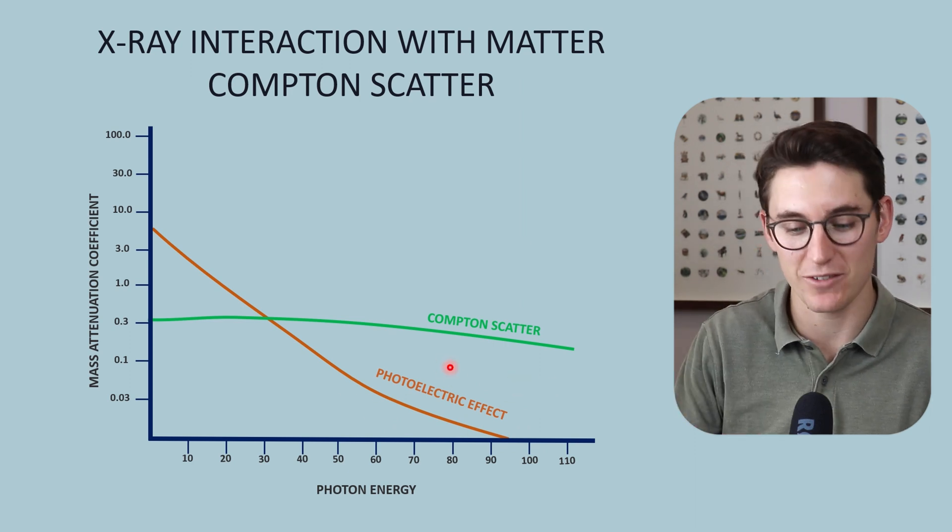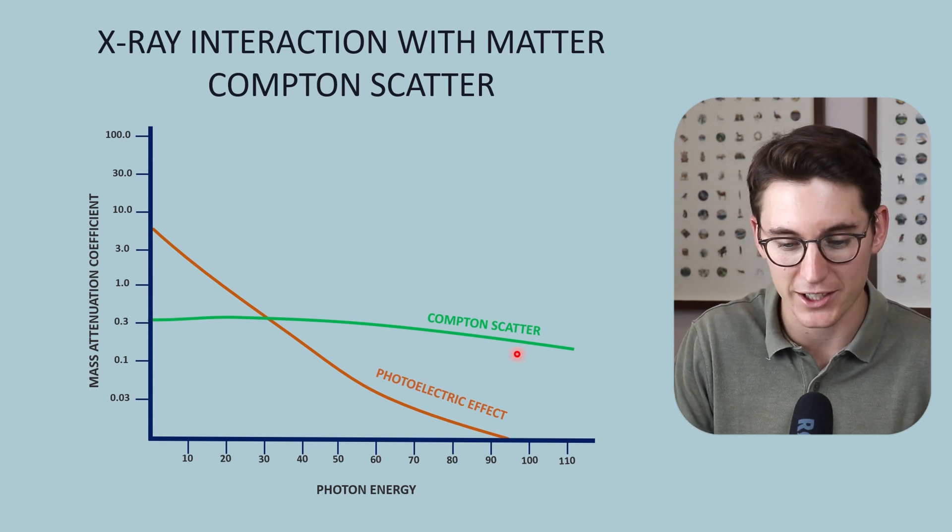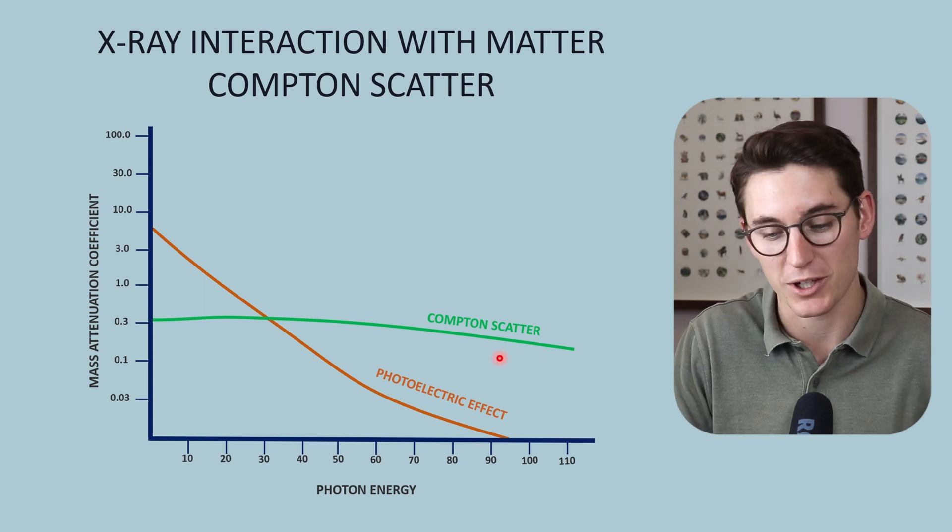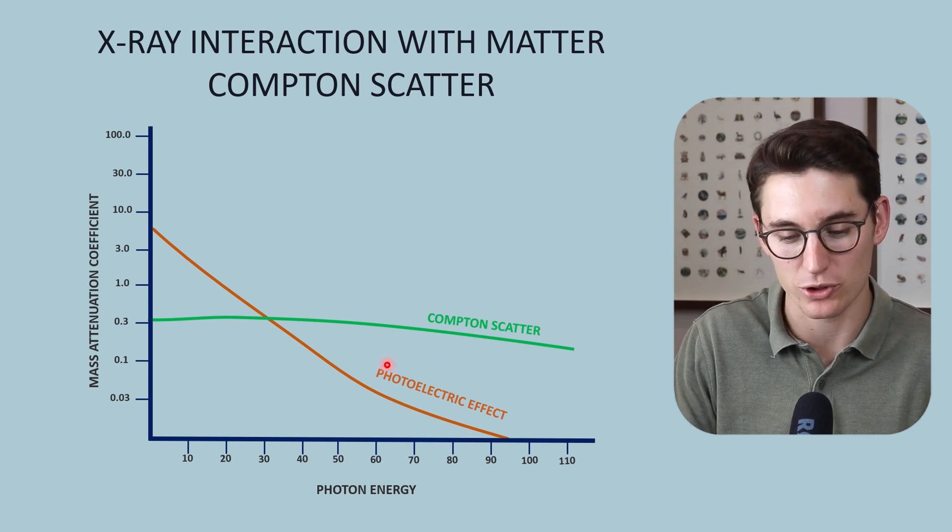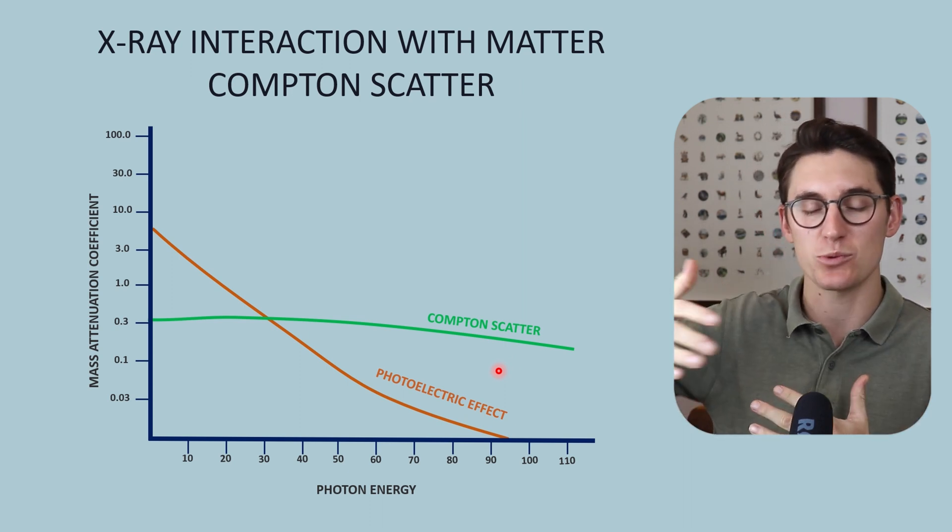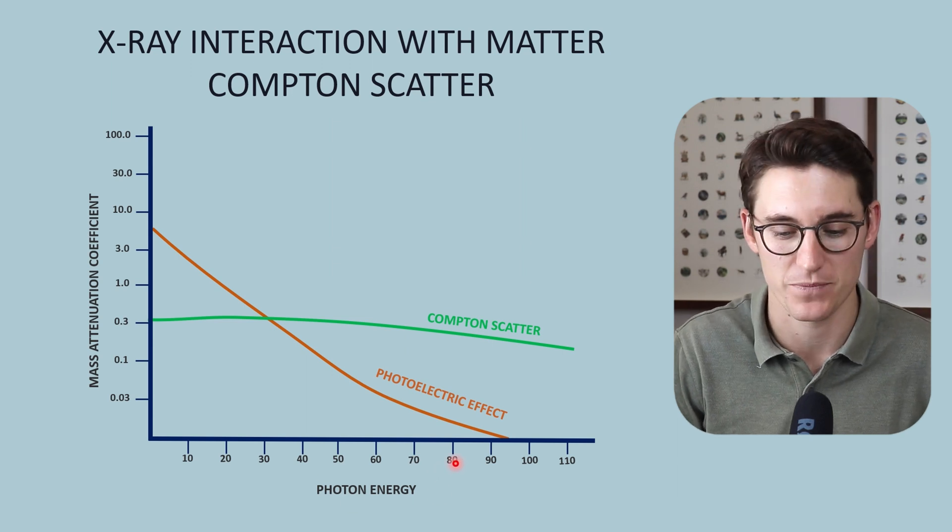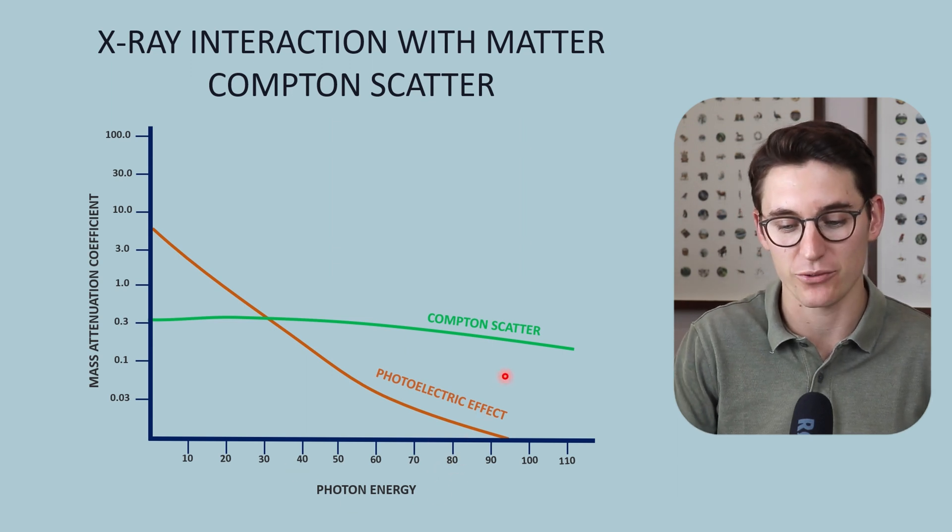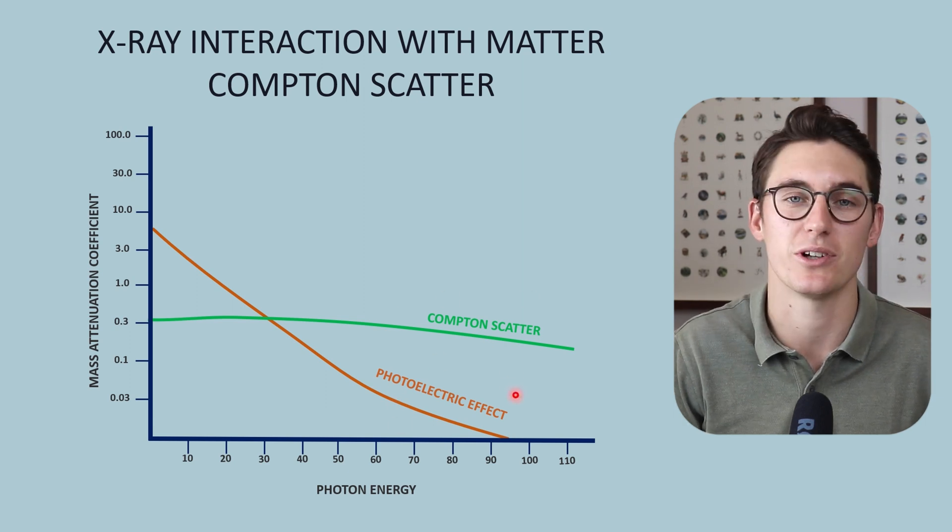As we increase our kVp, as we increase our photon energy, the signal provided to our x-ray detector has much more contribution from Compton scatter relatively speaking, as opposed to the photoelectric effect. We get more noise within our image and less contrast as we get higher exposures with higher photon energies. Changing our photon energy changes the proportion of Compton scatter to the photoelectric effect.